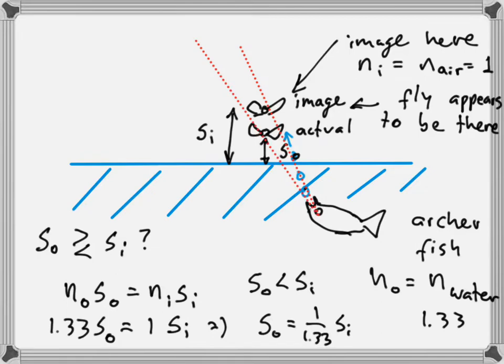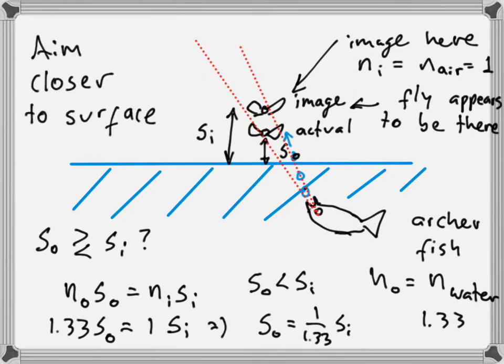The archer fish sees the fly in one direction but actually aims in a direction closer to the surface, because it knows the actual fly is below where it appears. If you're underwater and want to catch something above the water, you have to aim to a point closer to the surface than you think the object is.